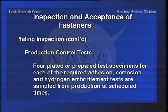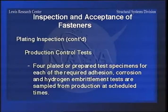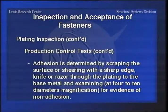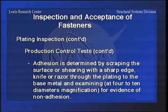You can take plated specimens for the required adhesion, corrosion, and hydrogen embrittlement tests from a production lot at scheduled times. You can determine the adhesion - and this is a real scientific method - by scraping the surface with a knife and then looking at it to see whether it is adhering properly with a magnifying glass. That's a method of inspection you can do yourself.